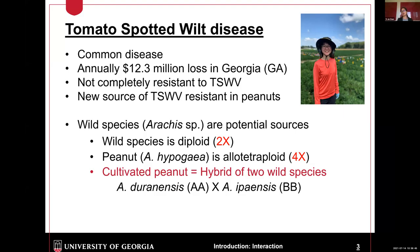However, the situation is getting better in peanut. We have good IPM and good cultivar peanuts. However, till now, we don't have a cultivar peanut that has complete resistance to TSWV. As the previous speaker mentioned, we should be proactive rather than reactive, so new sources of TSWV resistance in peanut are needed.